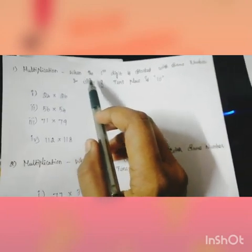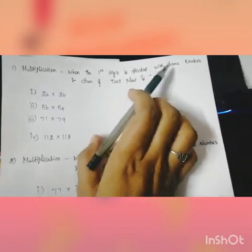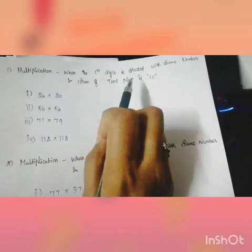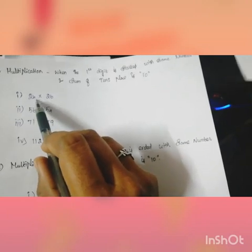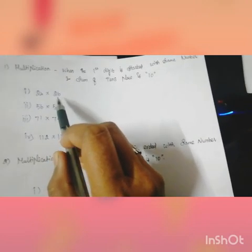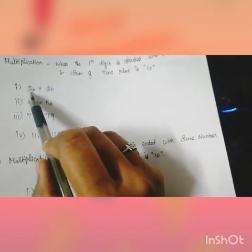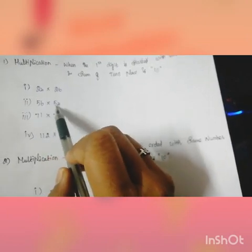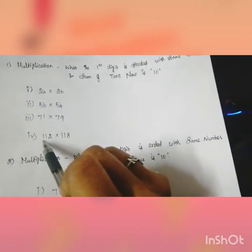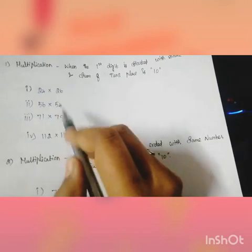First multiplication: when the first digit is started with same number and sum of tens place is 10. That is, first digit is same number and second number we add to 10. So 2, 2, 5, 5, 7, 7, 11, 11. So in the first digit is the same number.